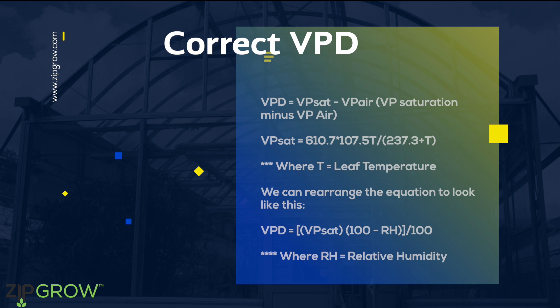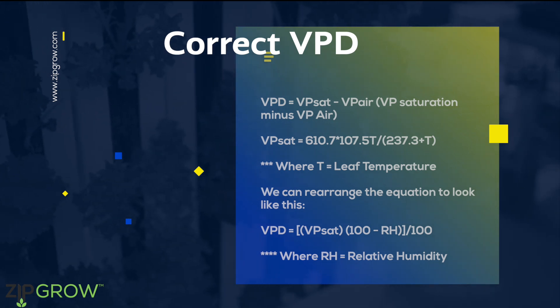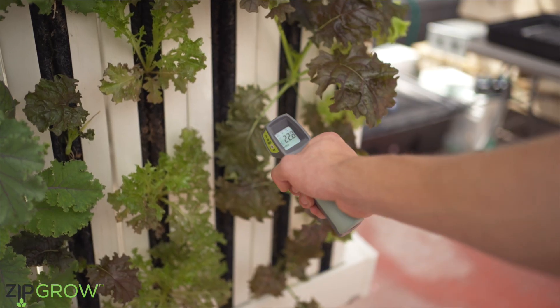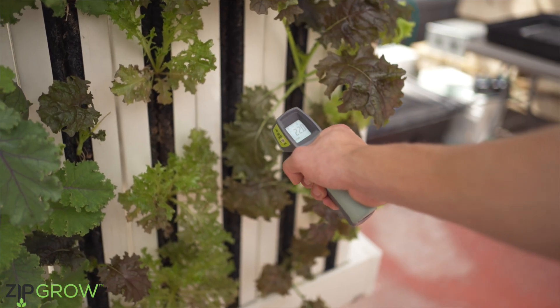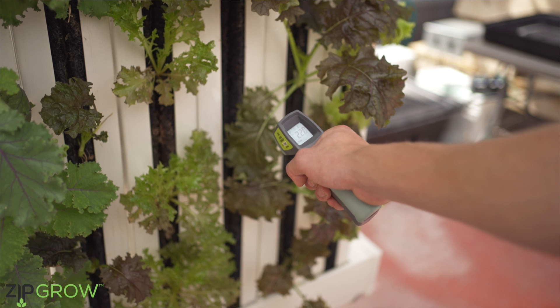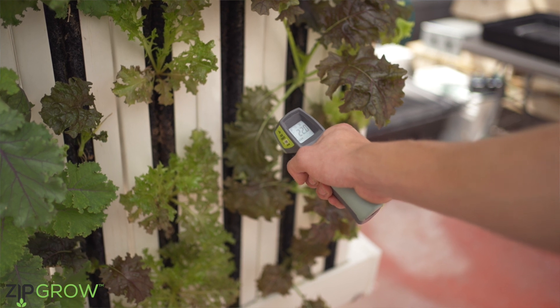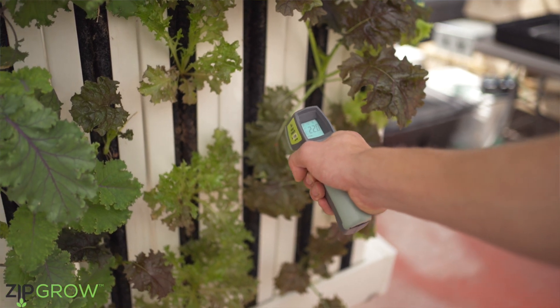Saturated vapor pressure is determined using the leaf temperature. Normally in the ZipFarm, the leaf temperature is consistently two to four degrees Celsius cooler than the air temperature. VPD is often referenced as a kPa, or kilopascal, measurement, and most crops optimally perform in a range of 0.8 to 1.1 kPa.